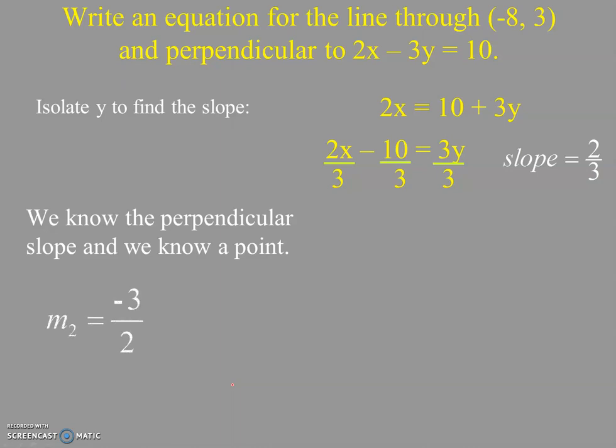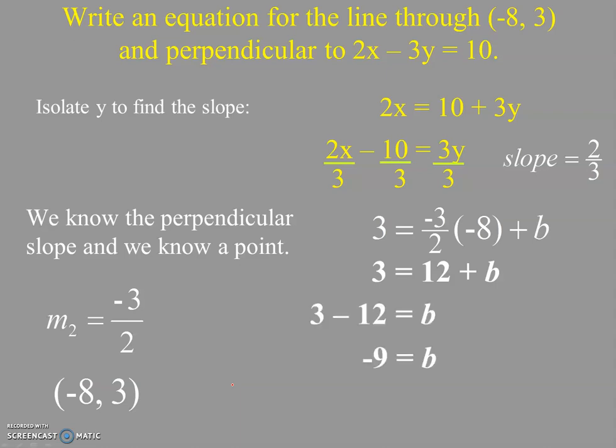So the perpendicular of 2/3 is negative 3/2, and the line that we're building is going to be passing through the point (-8, 3). And so we put those pieces into the y equals mx plus b format, those three pieces, and just like before, you multiply the slope and the x, and you bring it to the other side, and you find the value of b. Now remember, sometimes this is a fraction, and then you build your answer.